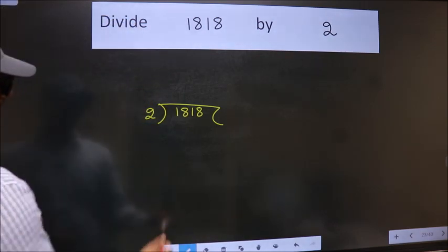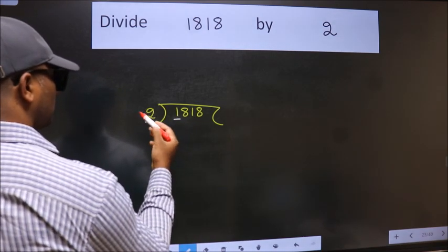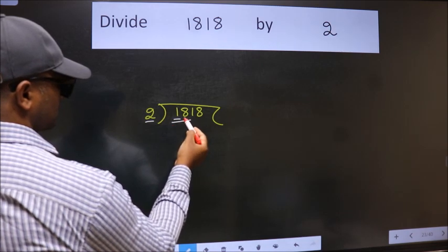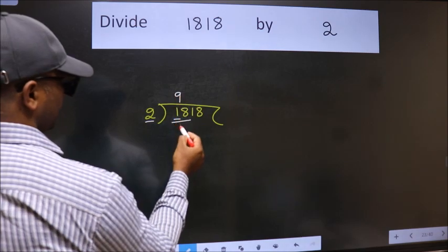Next, here we have 1, here 2. 1 is smaller than 2. So we should take 2 numbers, 18. When do we get 18 in 2 table? 2 times 9 is 18.